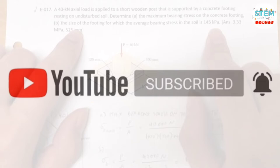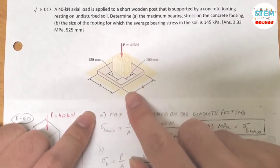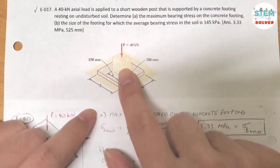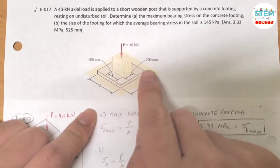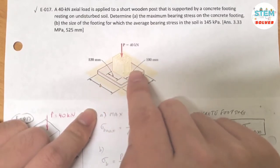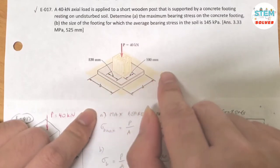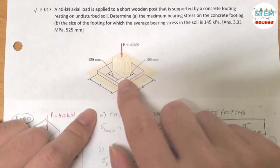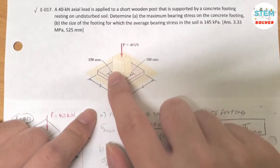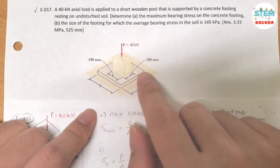Alright, without any further ado, let's begin. So here's the figure for it. You have a wooden post and it's supported by a concrete footing, and the concrete footing is resting on the undisturbed soil. And you have to find the maximum bearing stress of the wooden on the concrete footing and the size of the concrete footing.